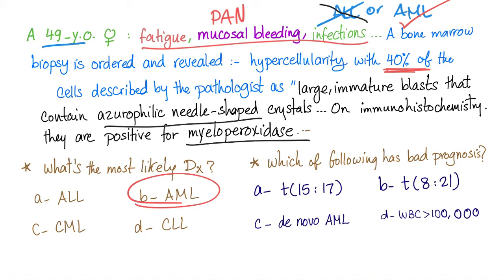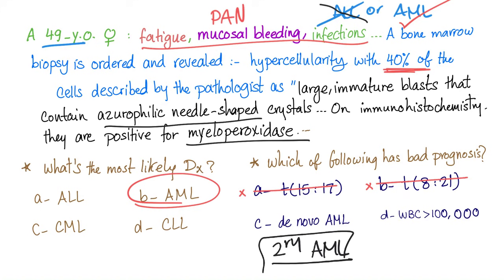Practice question: which of the following has bad prognosis? T(15;17) — acute promyelocytic leukemia — has excellent prognosis, so not that. T(8;21) — the most common subtype — has favorable prognosis, so not that either. De novo AML carries relatively better prognosis than secondary AML. The correct answer is white blood cell count greater than 100,000, which is an unfavorable prognosticator.